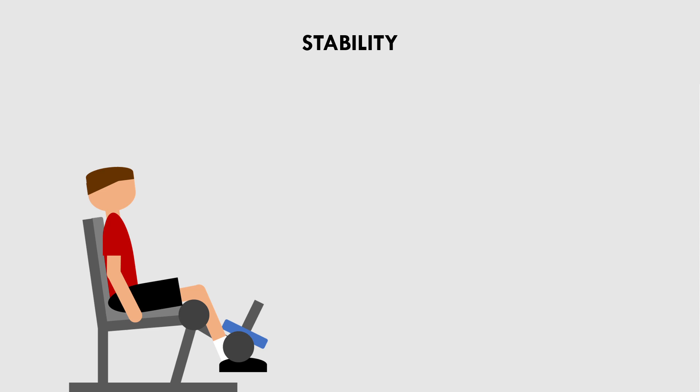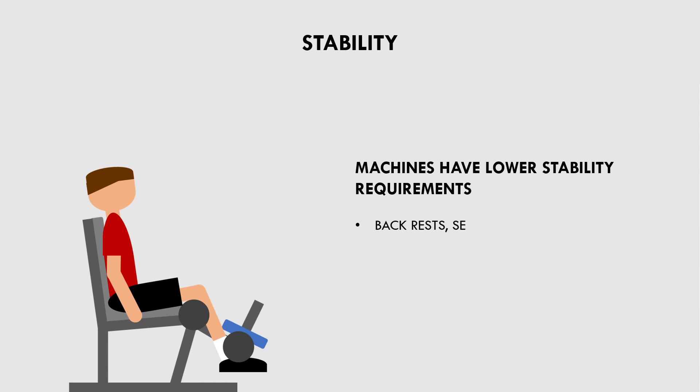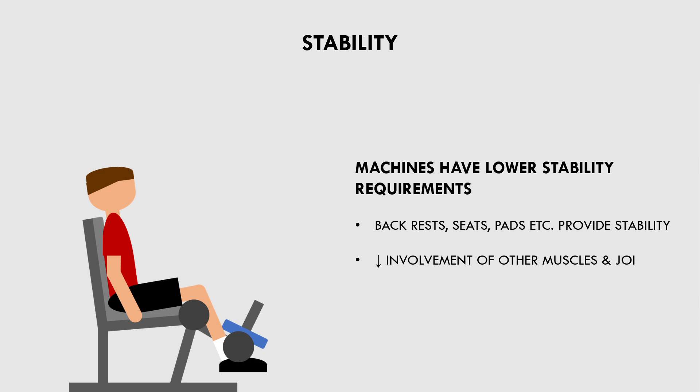The last primary benefit machines have over free weights is higher stability. Machines provide more stability with various seats, backrests, pads, and more, which essentially locks the trainee into a position so that they don't need to stabilise other joints. The benefit to this is that it concentrates the tension on a single muscle or muscle group without much involvement of other accessory or stability muscles. This means the target muscle is more likely to be the limiting factor to performance, allowing us to really disrupt a single muscle group with less systemic fatigue and less fatigue of other muscles.